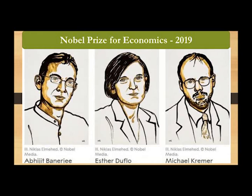Abhijit Banerjee, Esther Duflo, and Michael Kremer were awarded for their experimental research on poverty, and they developed tools for alleviating global poverty. Their experimental work has changed the culture of economics, especially development economics. They set up the Poverty Action Lab for their study. Another fact is that 2019 is the Golden Jubilee year of the Nobel Prize for Economics — it was first awarded in 1969. Abhijit Banerjee and his wife Esther Duflo are the first couple to receive the Nobel Prize in Economics.